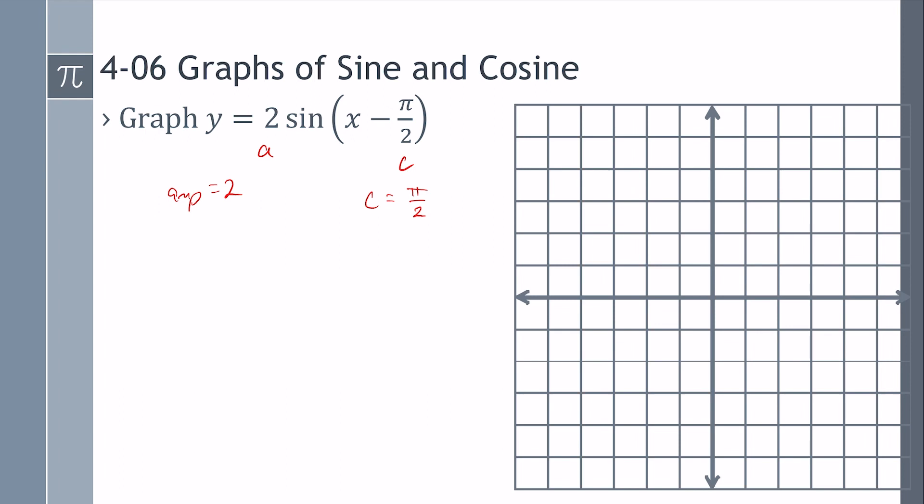All right, so what's that do? Well, that changes our phase shift. So our phase shift is C over B. B in this case is 1. So it is just pi over 2 over 1. Since it's positive, it is going towards the right.